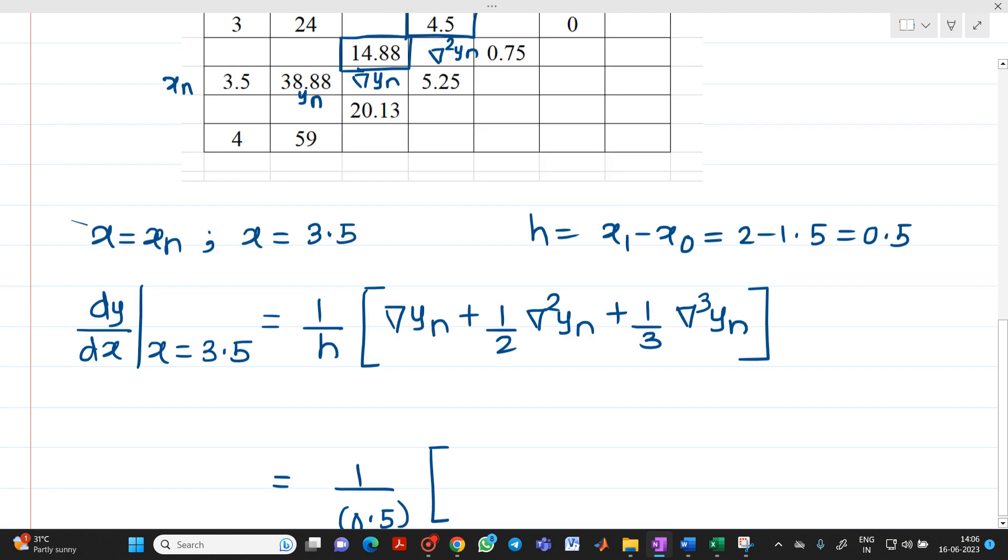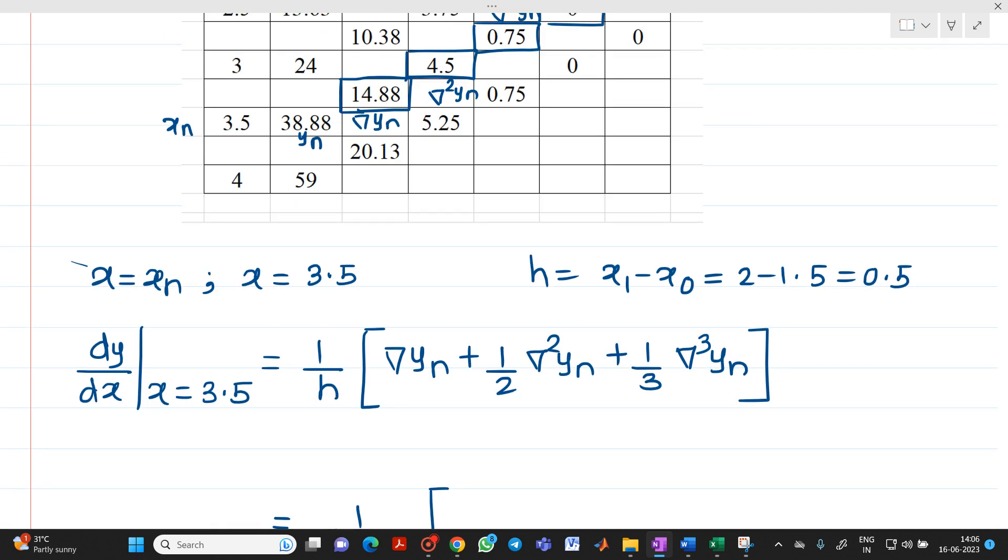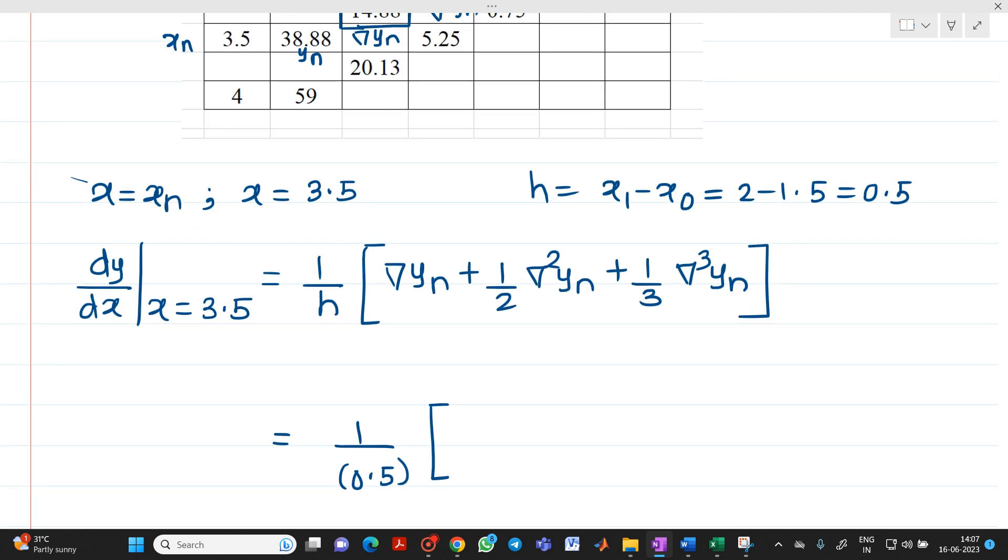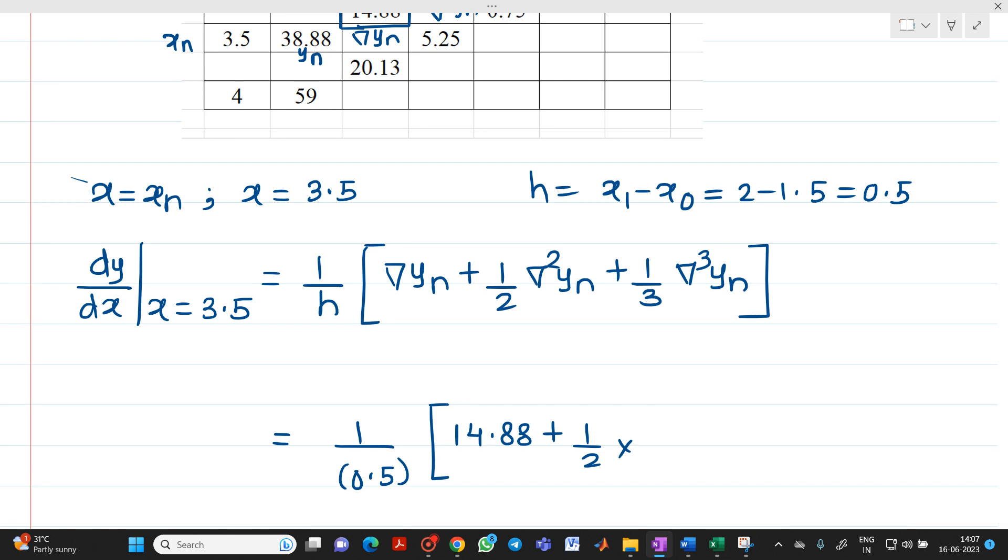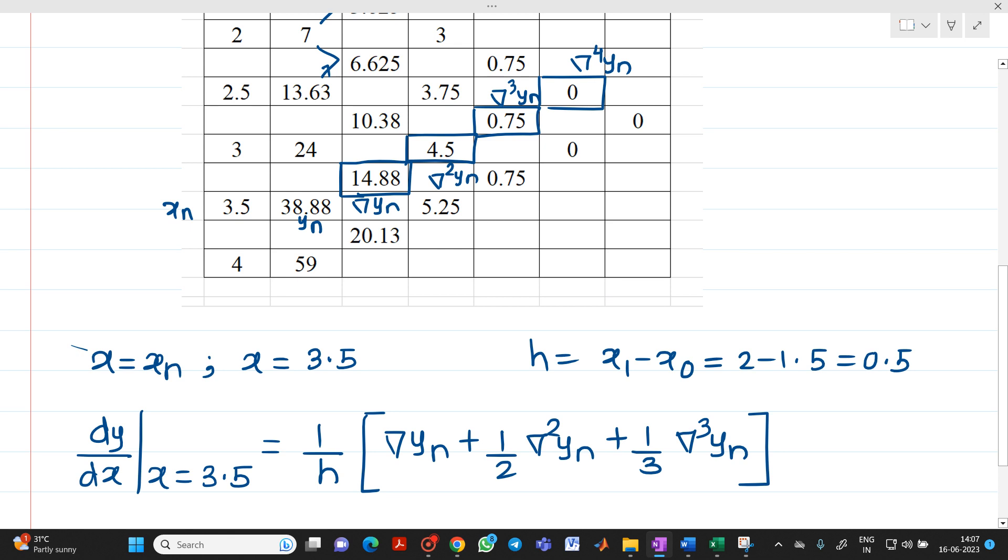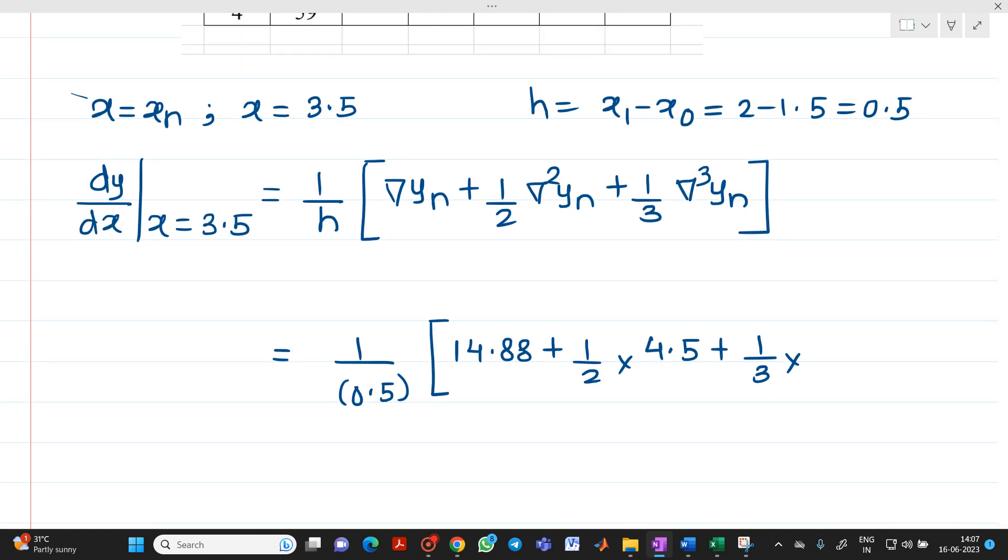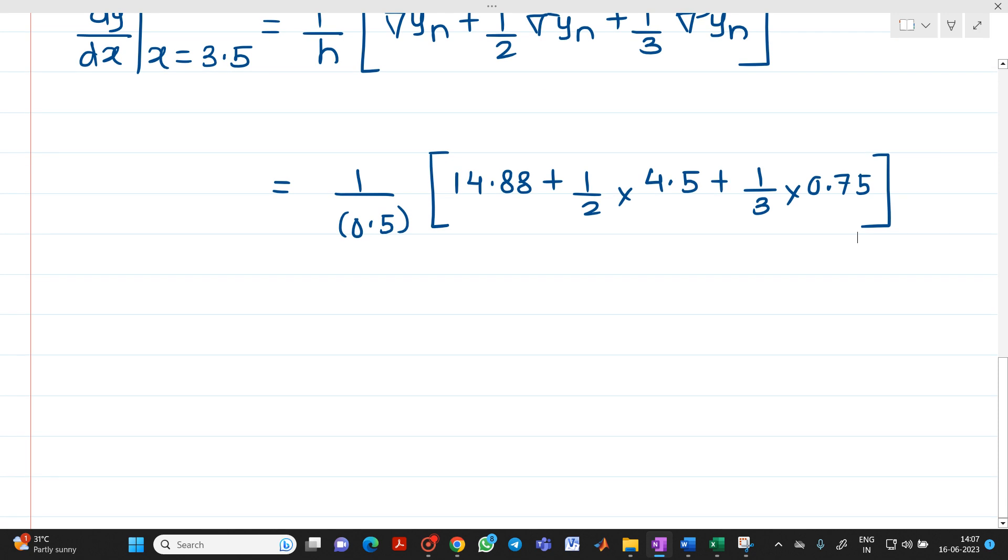Now what is del yn? If you see from your table, then del yn will be equal to 14.88 plus 1 by 2 into del square of yn. It will be 4.5. So write down here 4.5 plus 1 third into del cube of yn. Del cube of yn is 0.75. So this will be 0.75. So let us solve this.